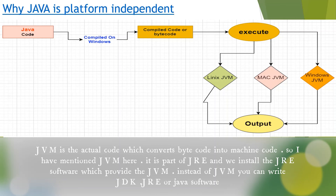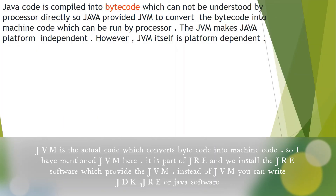Java code is compiled into bytecode, which cannot be understood by the processor directly. So Java provides the JVM to convert the bytecode into machine code, which can be run by the processor — because the processor can only understand machine code. The JVM converts that bytecode into machine code, making Java platform independent. However, the JVM itself is platform dependent. This is the reason why Java is platform independent.